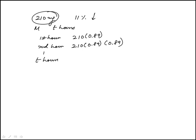Which means after T hours, it would be 210 times 0.89 to the T, because it would be repeatedly doing 89% of that. So this is the same as the first choice that's given, M of T is 210 times 0.89 to the T.